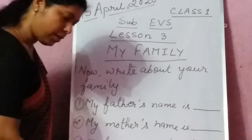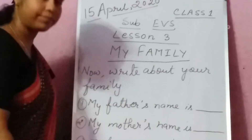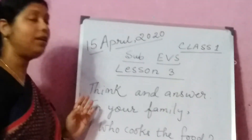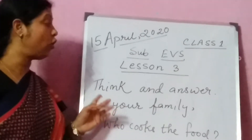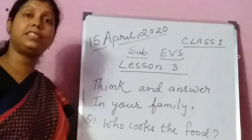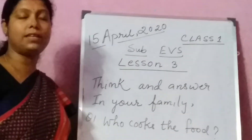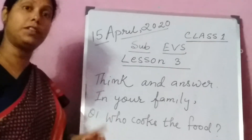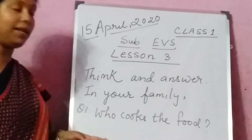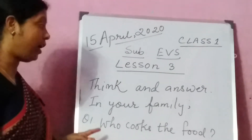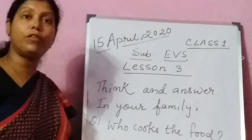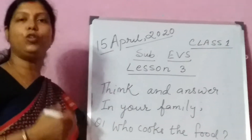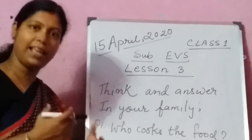Now we will do 'think and answer.' Children, you are going to think and answer. You are going to answer yourself, because this is related to you and your family. Who is doing what in your family? That I don't know — you know. So you have to write, and I will help you.